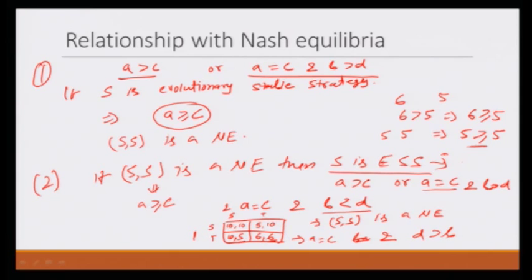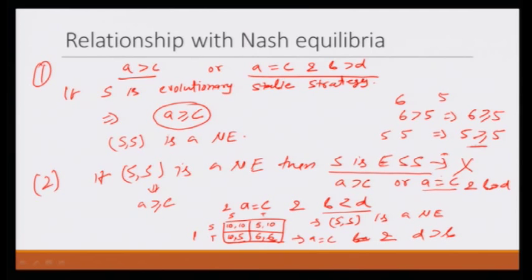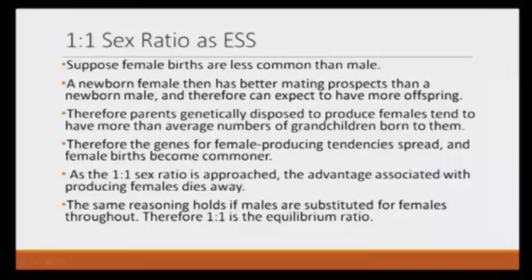So they are not equivalent. It only means that evolutionary stable strategy implies Nash equilibrium, but the other way around is not true. Now let us do two examples to wrap up this chapter — we will do one example using the sex ratio.